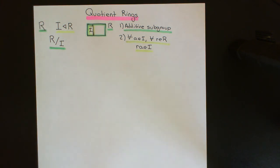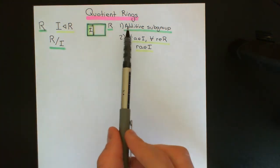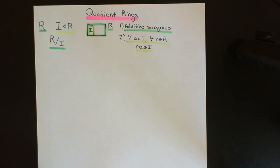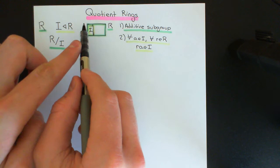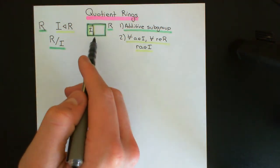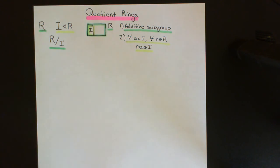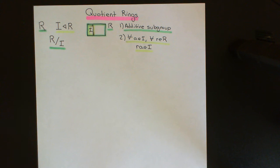Those are the two properties that an ideal must obey. Now, how are we going to construct a quotient ring of R by I? This will be extremely analogous to how we construct a quotient group. First, we'll use the fact that the ideal is an additive subgroup of the ring when viewed just as a group. Since it's an additive subgroup of an abelian group, it's automatically a normal subgroup, so we can form the quotient group, and then we'll stick a multiplication law on top using property two.